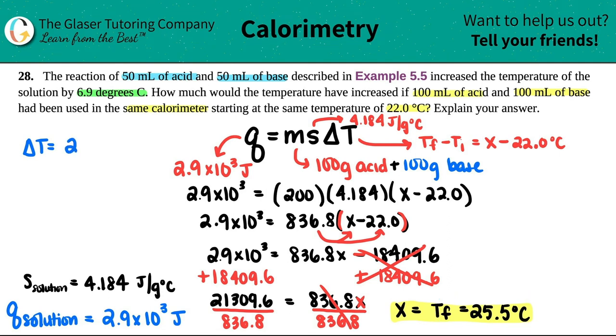So if it was 22.0 degrees Celsius and the final was 25.5 degrees Celsius, how much was the increase? I'll just subtract the two of them. So 25.5 minus 22, I get 3.5 degrees Celsius increase. And that is what they're looking for.